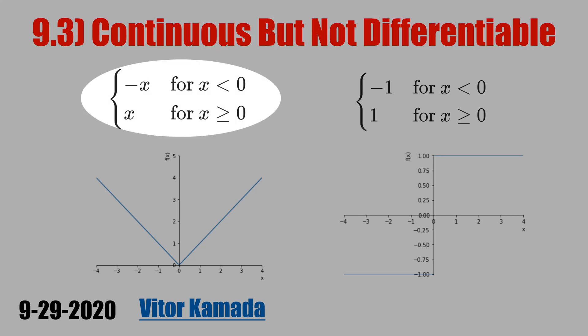Let's define the module of x. For x below zero, minus x. It is the left side of the graphic. For x above zero, it's x. It is the right side of this graphic here.